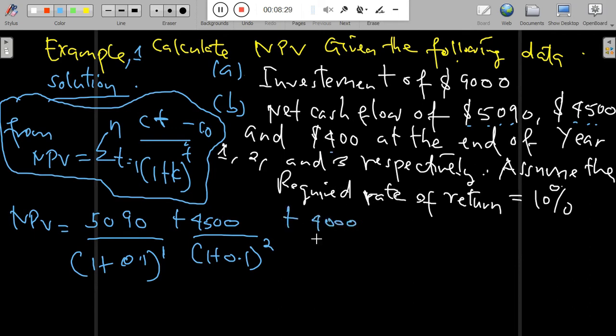For the third year, we plug in again the net cash flow, that is $4,000, divided by 1 plus 0.1 raised to the power of 3. Now we minus the initial investment outlay, that is $9,000.